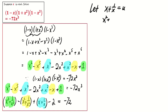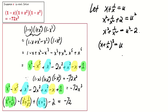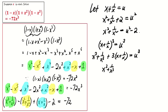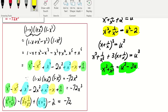This suggests we let x plus 1 over x equal u. Squaring both sides gives x squared plus 1 over x squared plus 2 equals u squared, so x squared plus 1 over x squared equals u squared minus 2. Cubing x plus 1 over x equals u gives x cubed plus 1 over x cubed plus 3 times (x plus 1 over x) equals u cubed, so x cubed plus 1 over x cubed equals u cubed minus 3u. We are now ready to substitute.